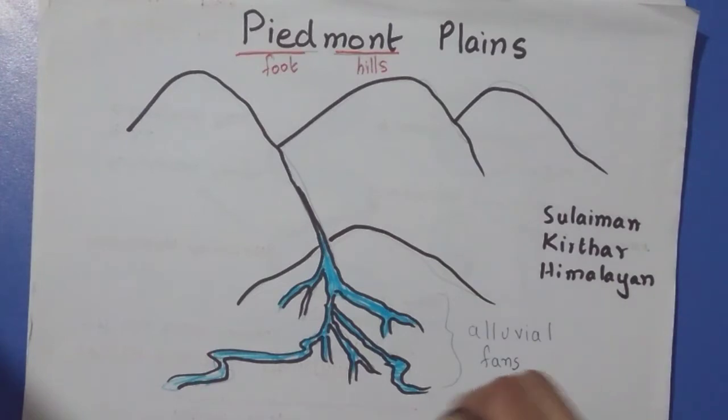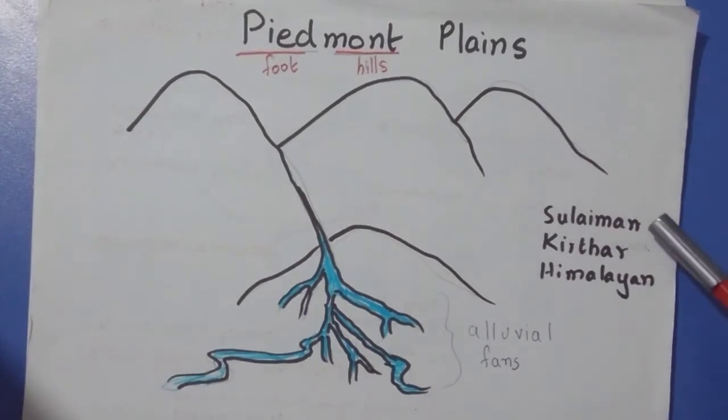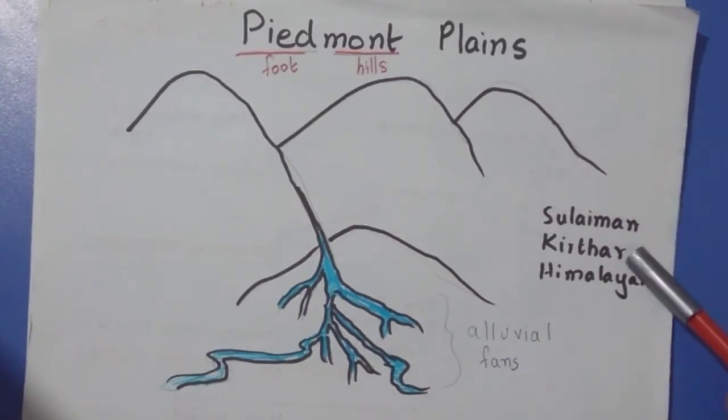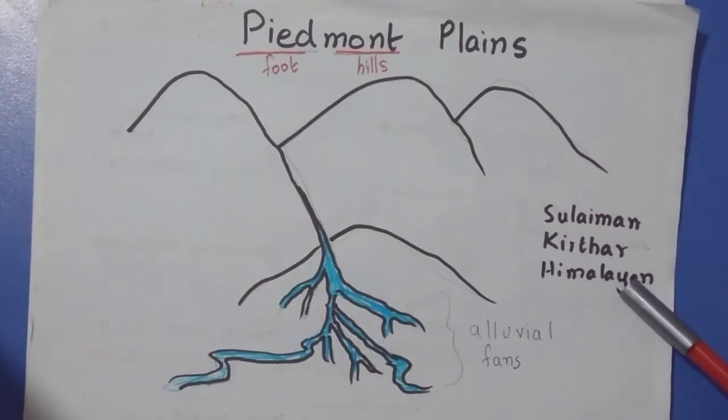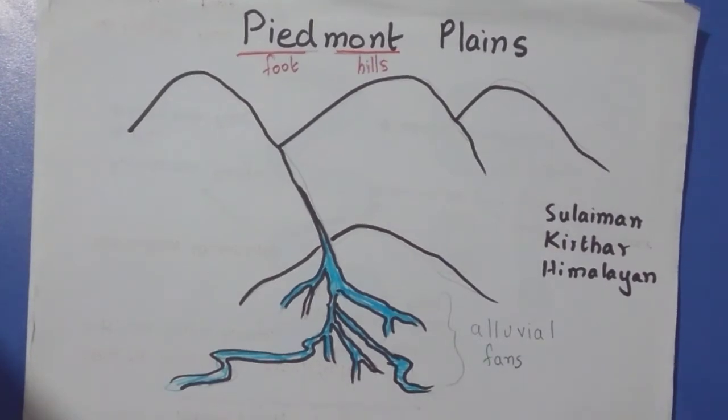So with the name itself we know that this feature would be found at the foothills of mountains. In Pakistan, these Piedmont Plains are located in the foothills of the Suleiman ranges, the Kirthar ranges, and the Himalayan ranges. The main feature of these Piedmont Plains is alluvial fans, which you would use to identify this area.